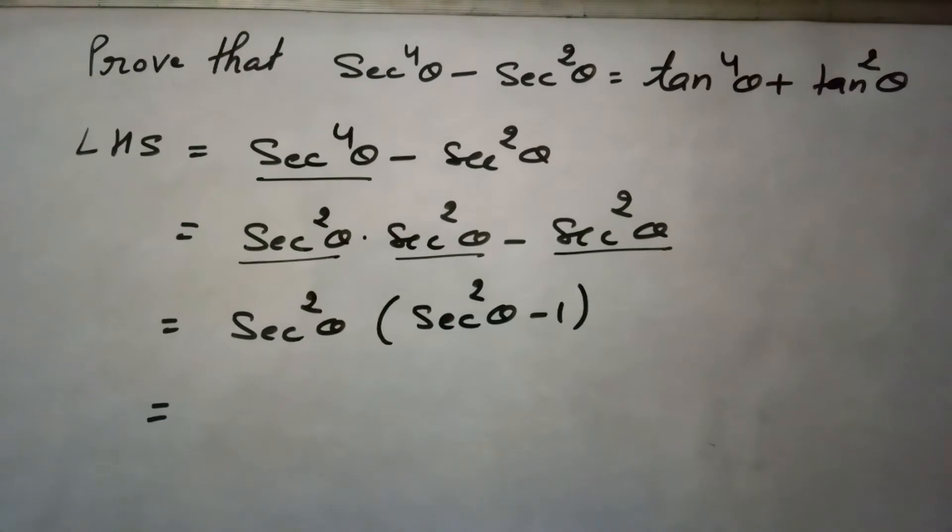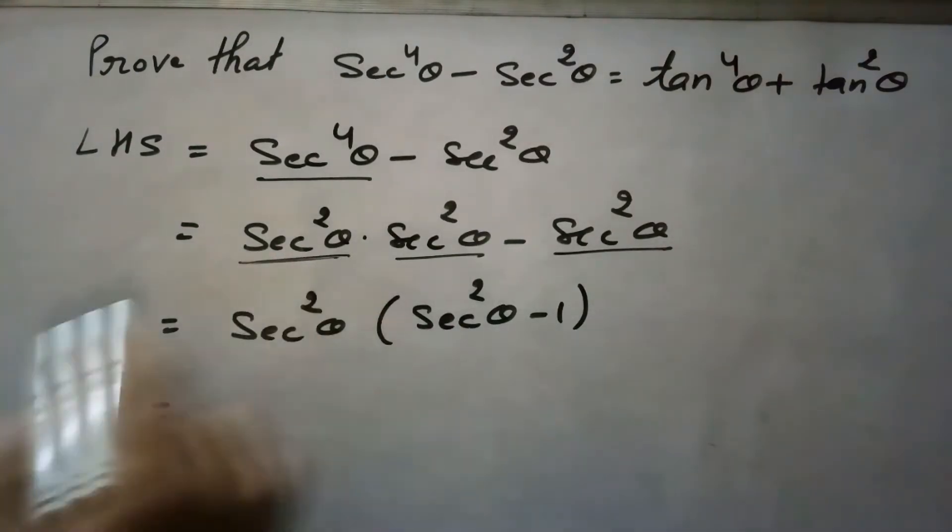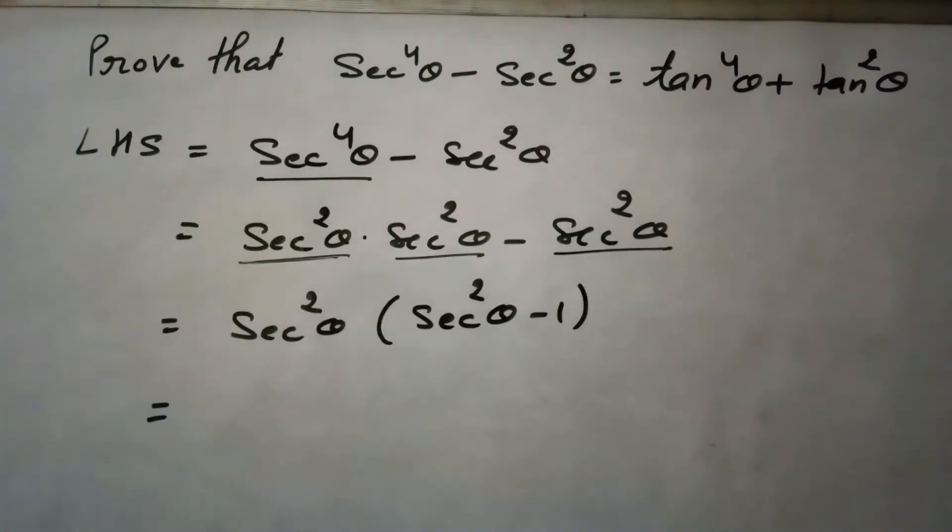So we can take square common here. Now we have taken secant square theta common from these both. So we are left with secant square theta into secant square theta minus 1.